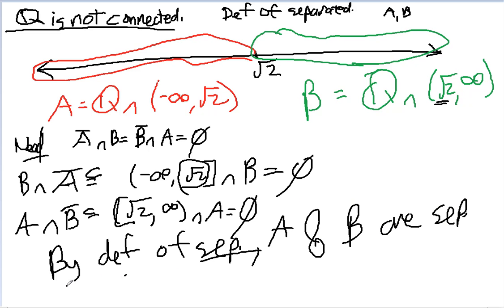So by definition of disconnected, Q, which I can write as A union B, is disconnected.